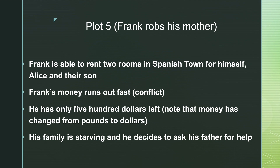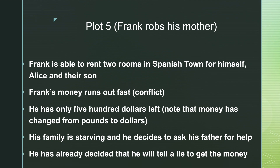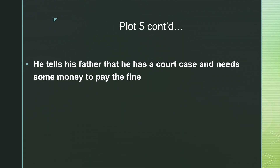His family is actually starving — like food not in the house. He decides that he's going to ask his father for help, which means he needs to take a trip back to Jimmy P's. And he has already, in true Frank character, decided that he's not going to tell the truth. He's going to lie about the reason why he wants the money. So when he gets to Jimmy P's, he concocts a fabulous story about having to go to court and needing money to pay the fine. I'd like you to identify the incident that Frank basically described that led to him quote unquote having to go to court.